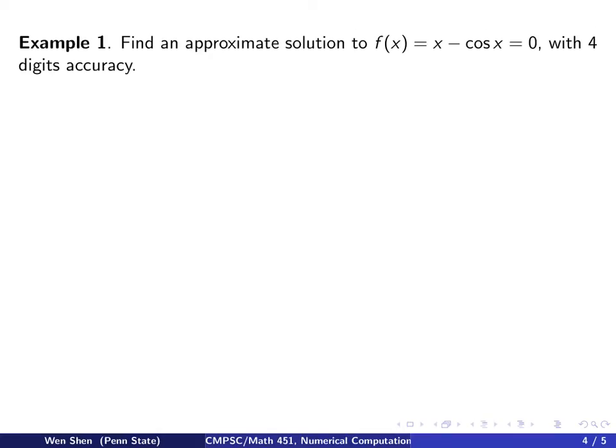Now let's take a look at some examples and see this fixed point iteration in action. Our first example is a very simple function, f of x simply equals to x minus cosine of x, and we want to find the root, and I require four digits of accuracy.